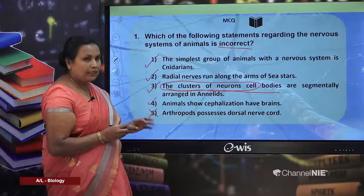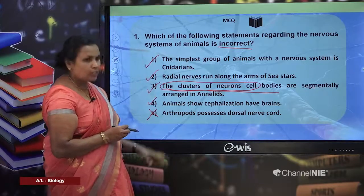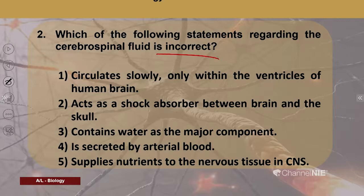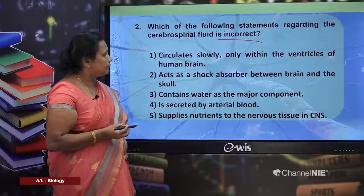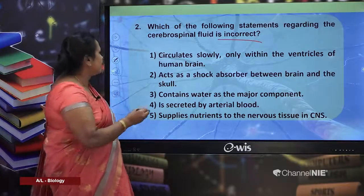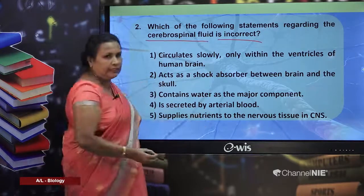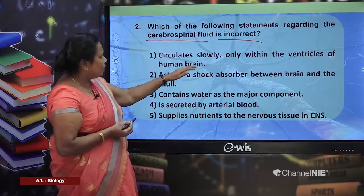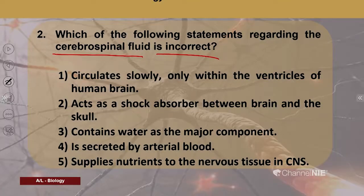Second MCQ: which of the following statements regarding cerebrospinal fluid is incorrect? You are asked to find the incorrect answer. First option: cerebrospinal fluid circulates slowly only within the ventricles of the human brain.